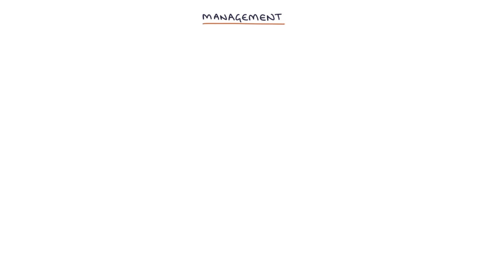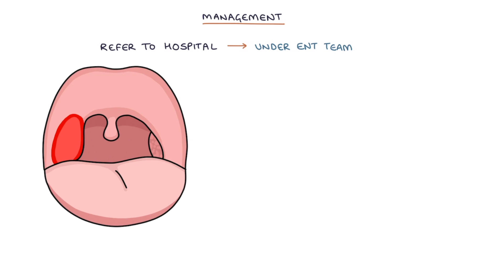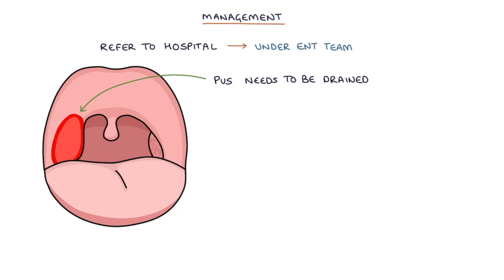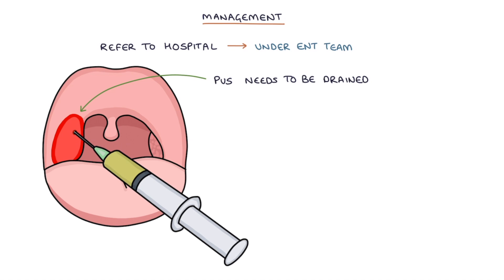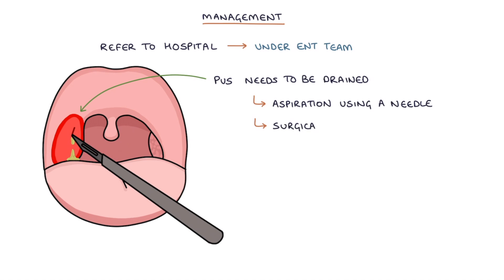Finally, let's talk about management. Patients should be referred to the hospital under the ENT team's care. The pus trapped inside the peritonsillar abscess needs to be drained, as antibiotics alone are usually insufficient. There are two options: aspiration of the pus using a needle, or surgical incision and drainage.